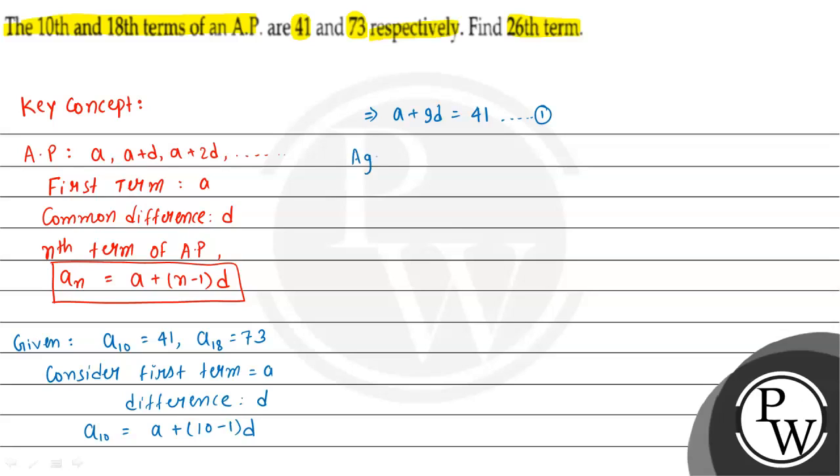Again, the other condition is A_18 equals 73, so a plus 18 minus 1 into d equals 73, which means a plus 17d equals 73. This is equation 2.